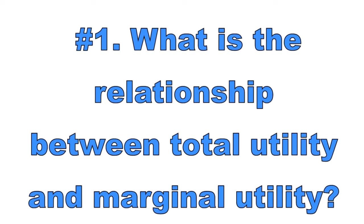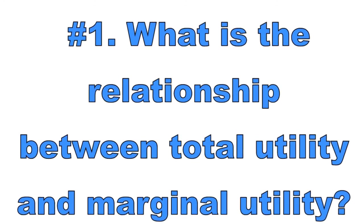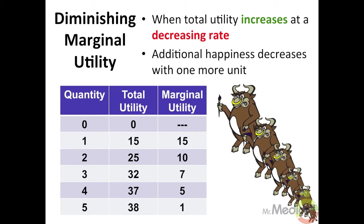Number one: what is the relationship between total utility and marginal utility? As consumers increase their purchases of any product, their total utility or satisfaction from consumption initially increases at an increasing rate. At some point, total utility will continue to rise with more units purchased but at a decreasing rate. When the rate of increase slows, consumers are experiencing diminishing marginal utility.